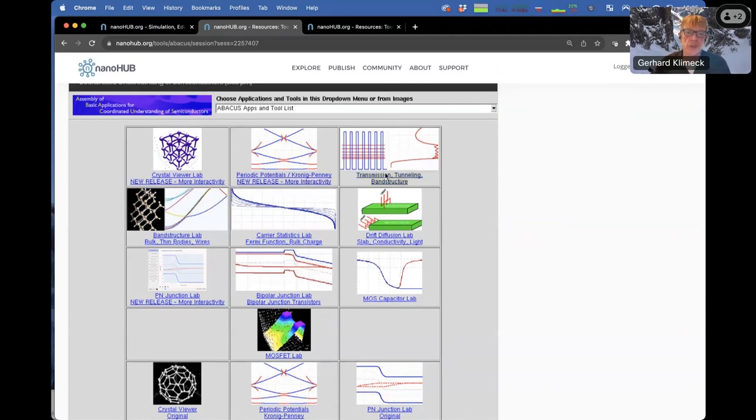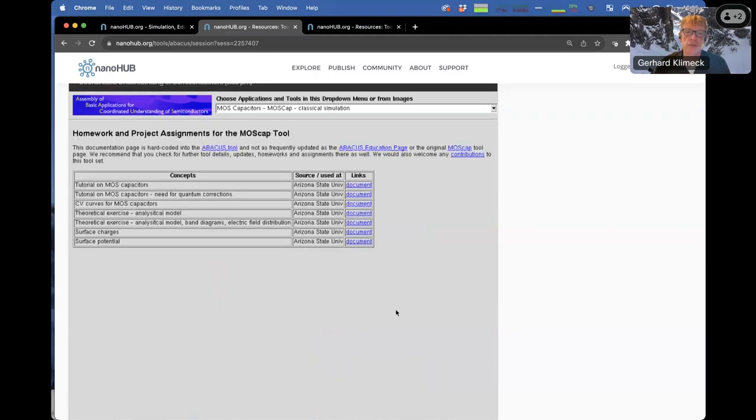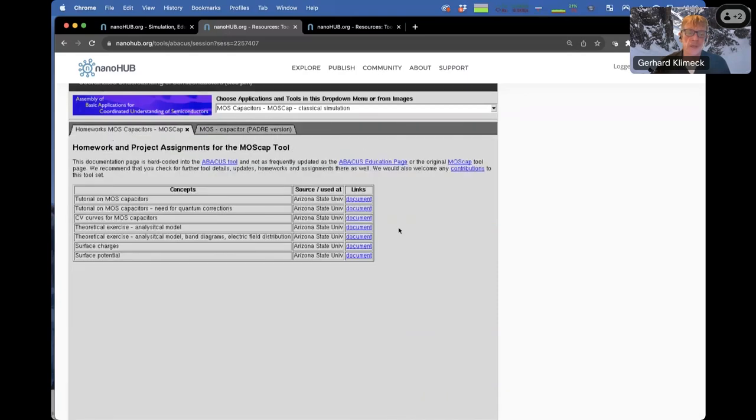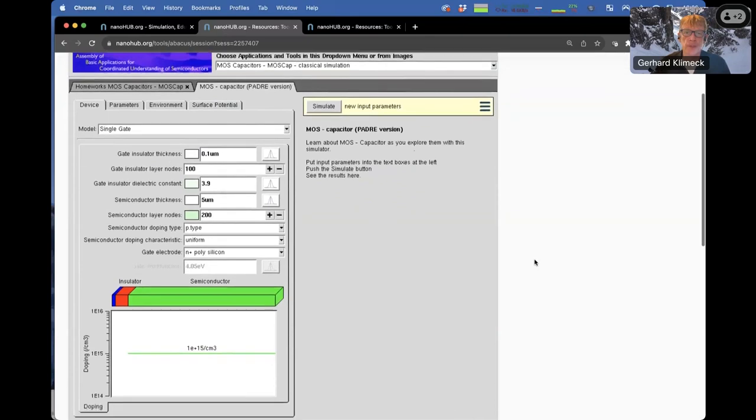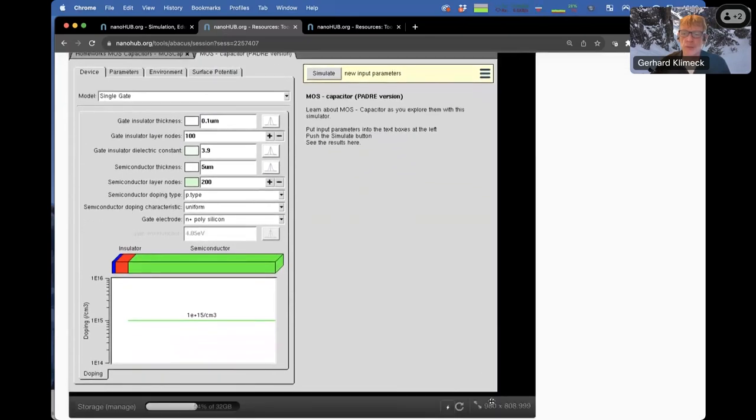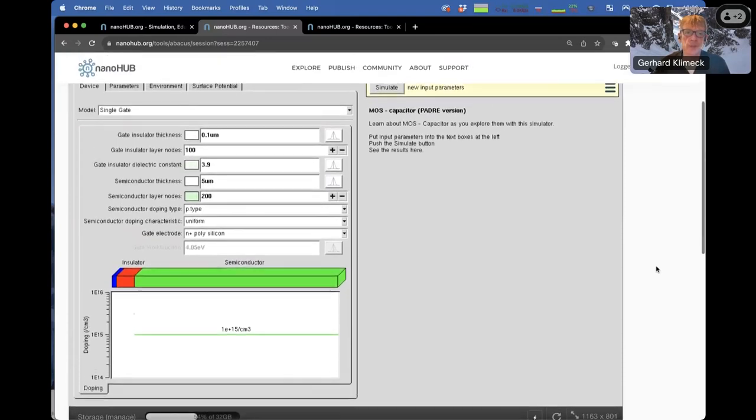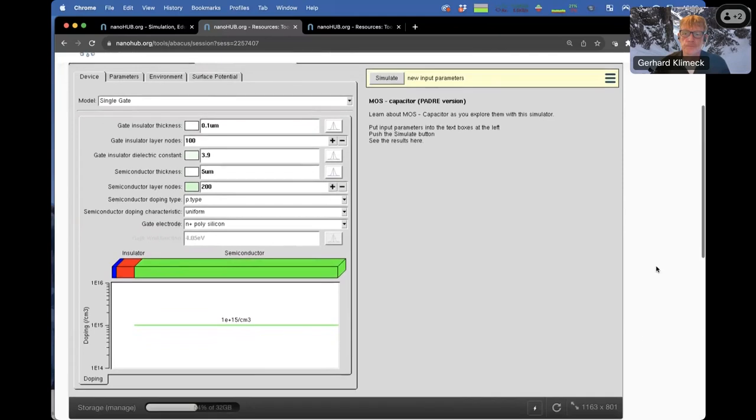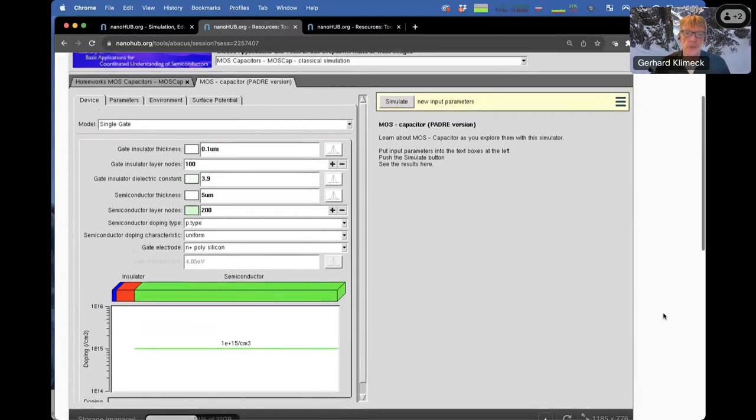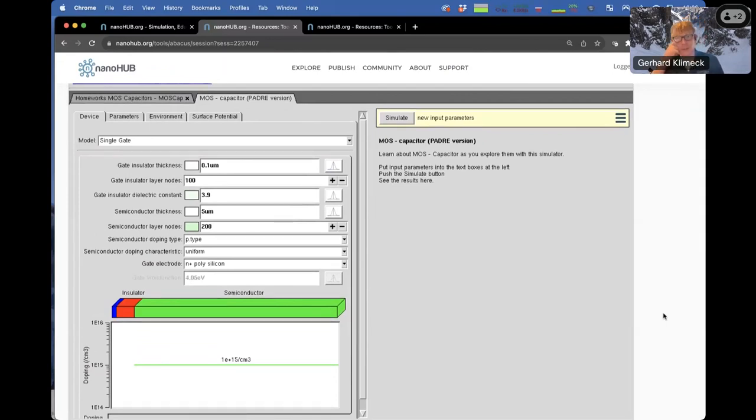You start maybe from crystals, explain band structure. You might have realistic band structure for silicon or band structure in nanowires and ultrathin bodies. There's a carrier statistics lab, drift diffusion lab, PN junctions. Last week we talked about bipolar junction transistors. And here is this MOS capacitor lab. If I click on that, it flashes a page of accumulated material where you can download exercises. Here is the tool inside Abacus. You can always go to a tool and shape it a little bit so it fits better into your screen.